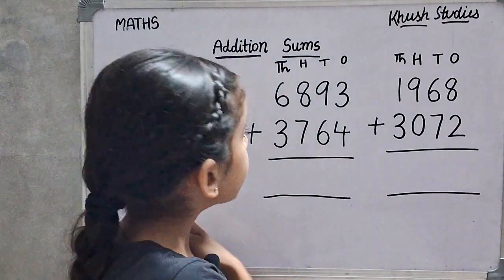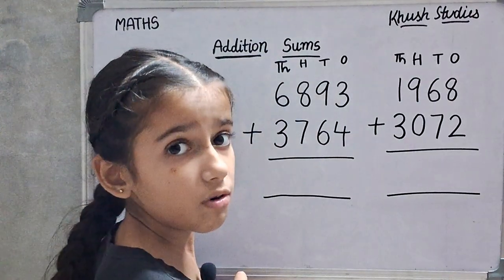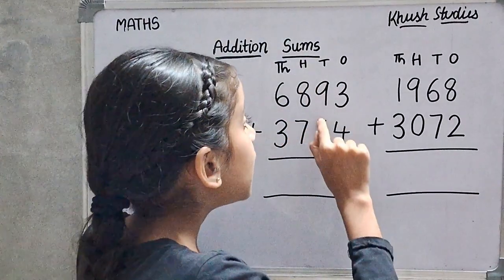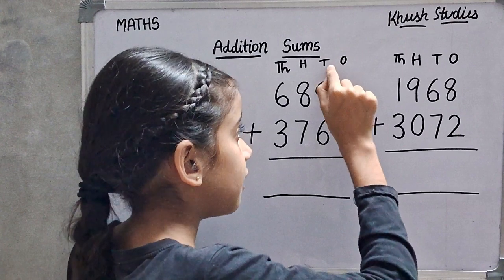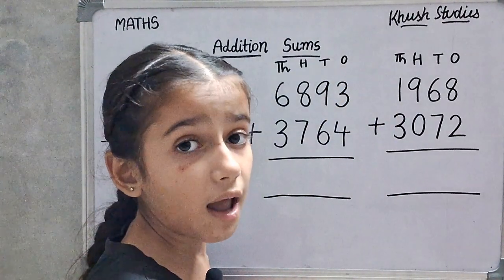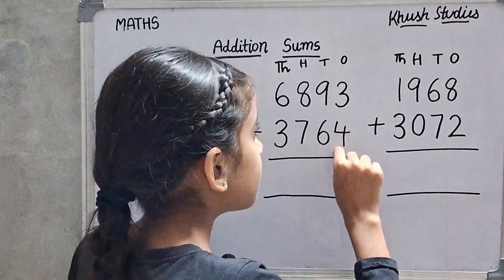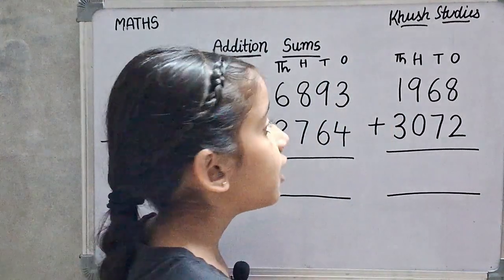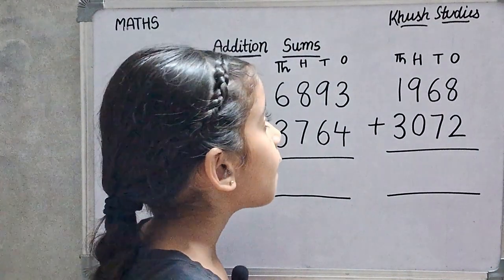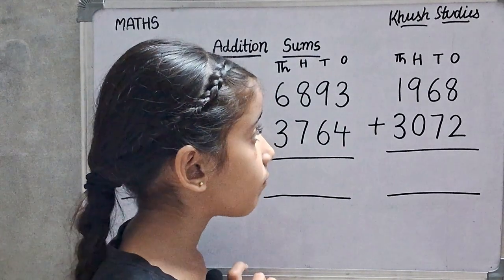Now, we will add 6,893 plus 3,764. First, we will add the ones digit. 3 plus 4 is 7.